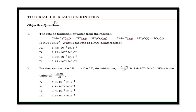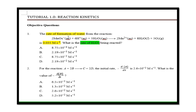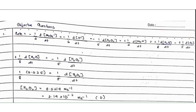Let's discuss tutorial chapter 1: reaction kinetics objective questions. First, we must understand and analyze the question. For question one, the rate of formation of water is given for the reaction, which is 0.035 molar per second. The question asks for the rate of hydrogen peroxide being reacted, so we need to write out the differential rate equation and find the relationship between the rate of formation of water and the rate of peroxide being reacted.